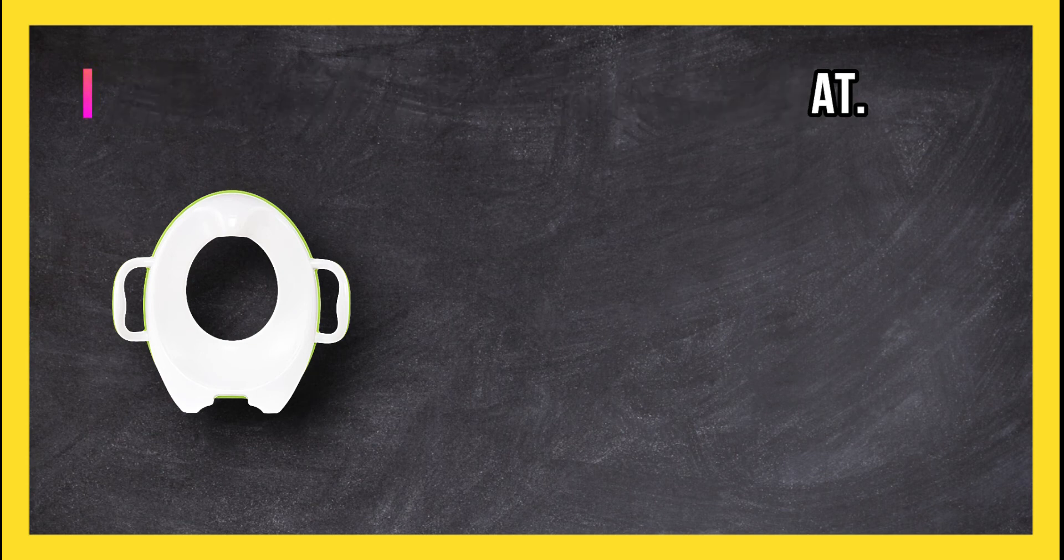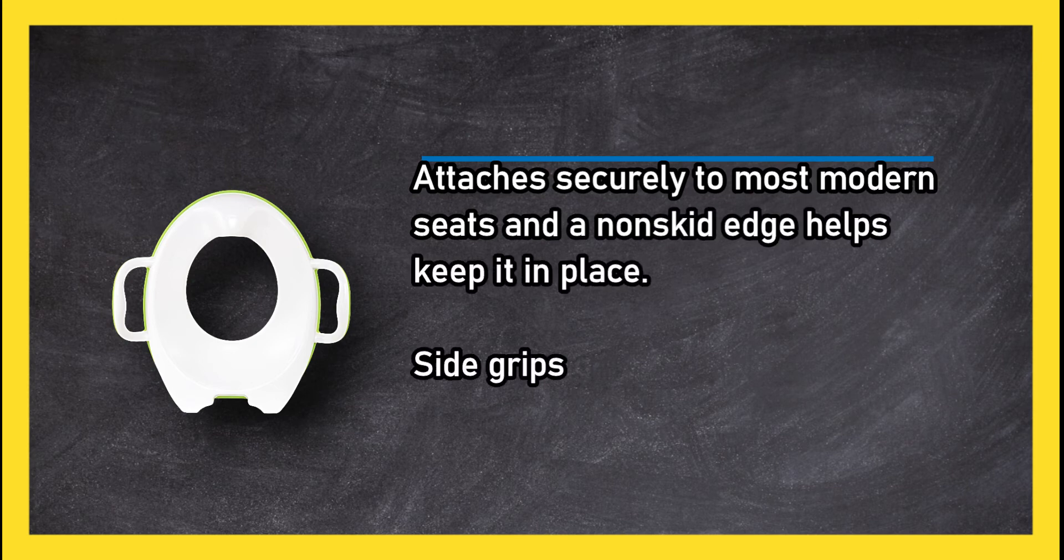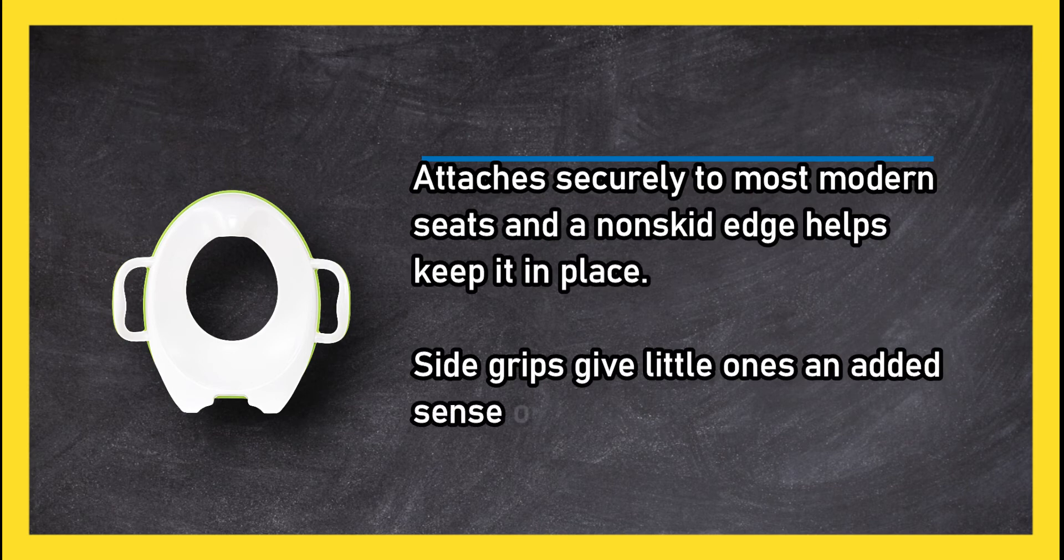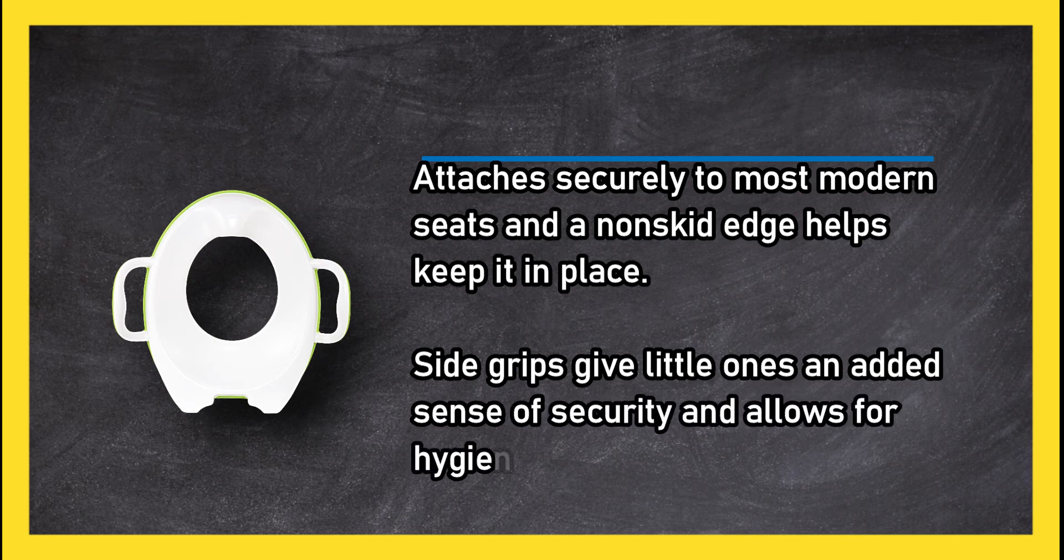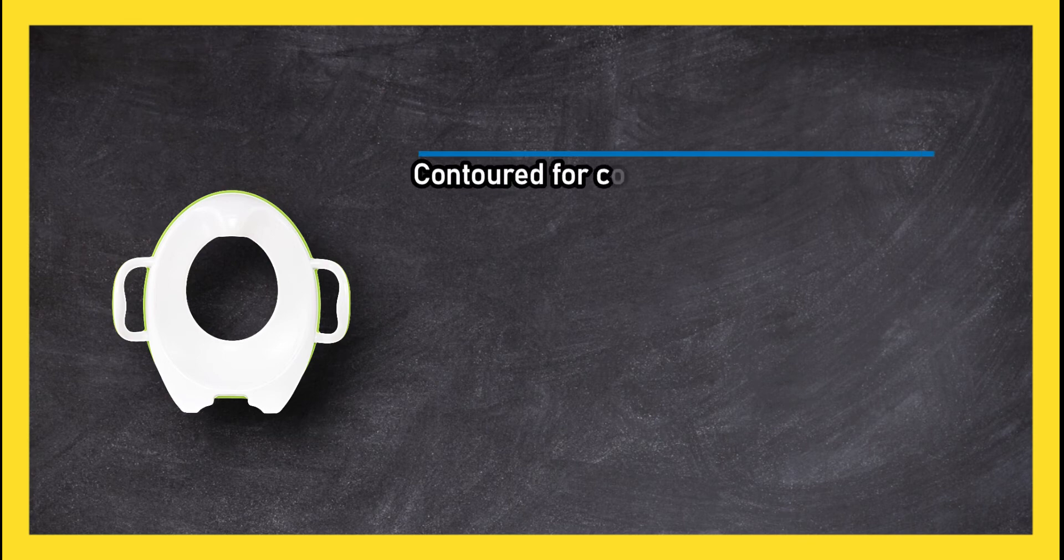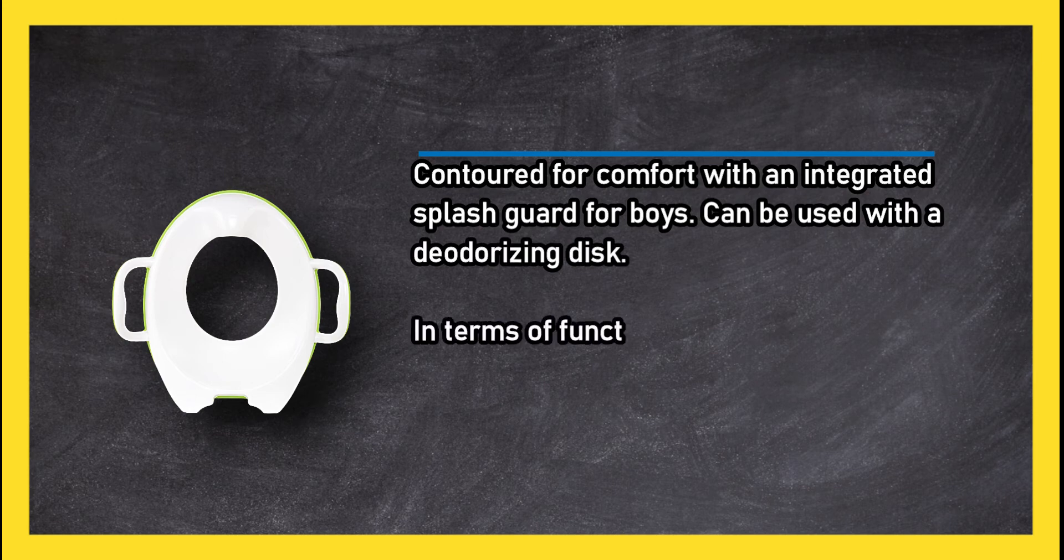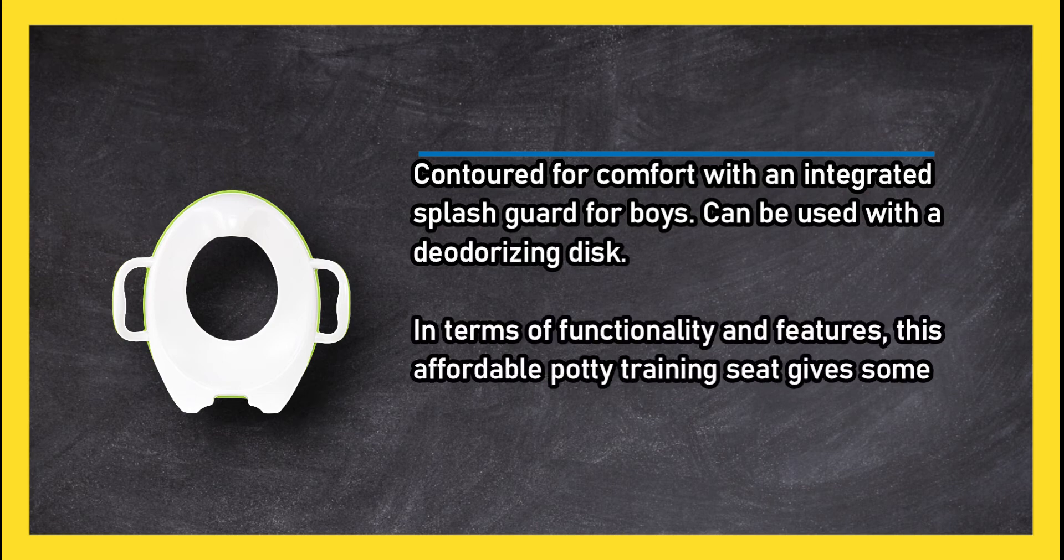Attaches securely to most modern seats and a non-skid edge helps keep it in place. Side grips give little ones an added sense of security and allows for hygienic handling. Contoured for comfort with an integrated splash guard for boys, can be used with a deodorizing disc. In terms of functionality and features, this affordable potty training seat gives some pricier models a run for their money.